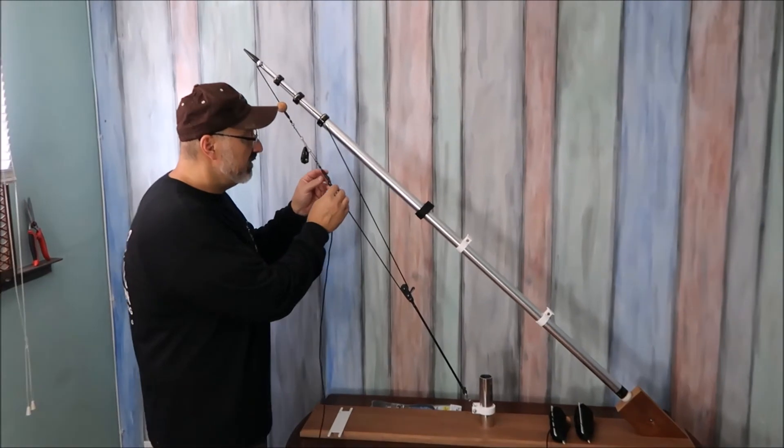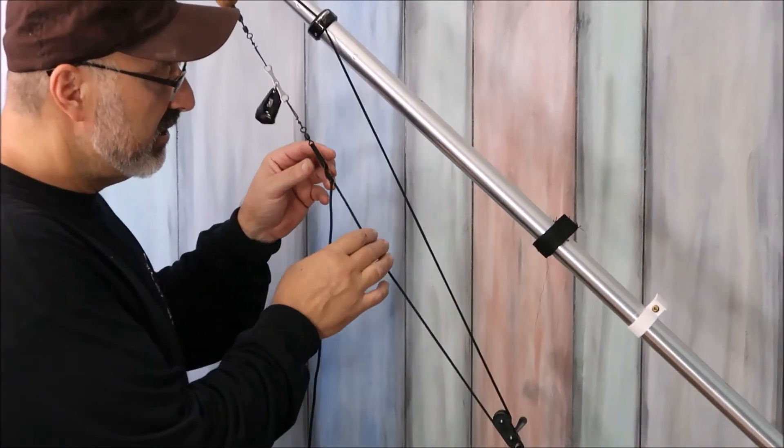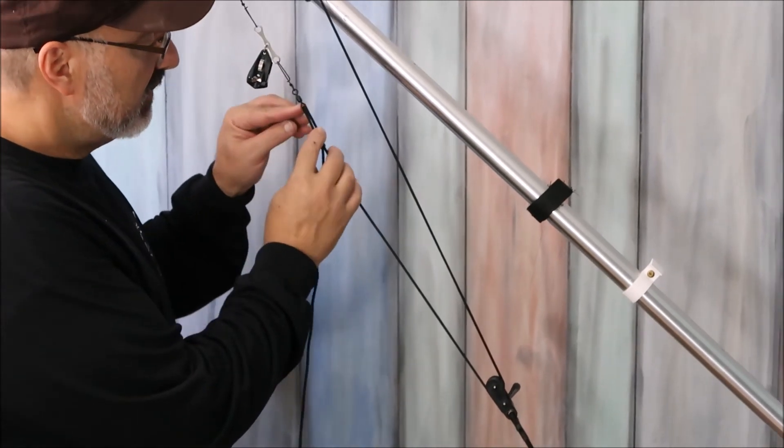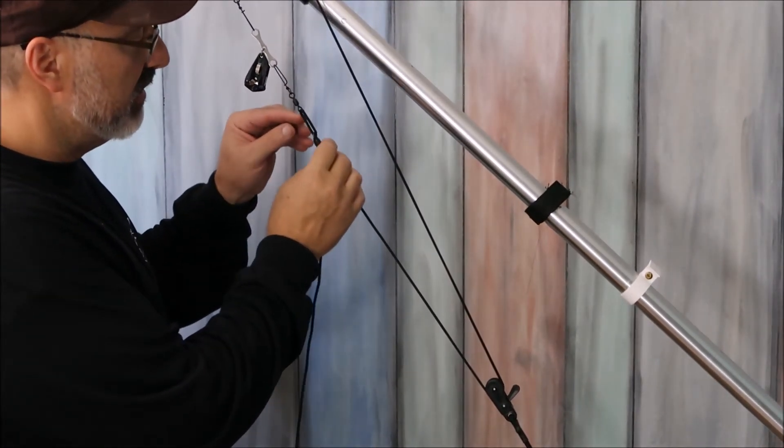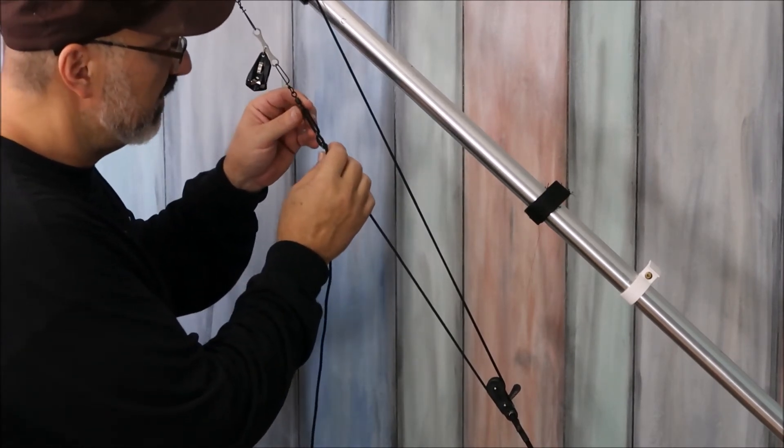Take some time to fine tune your line to where you've got it about the nominal tension in the loop that you want. You've got some adjustment this way. Remember, one inch in either direction is going to add quite a bit of tension or remove tension from your line.